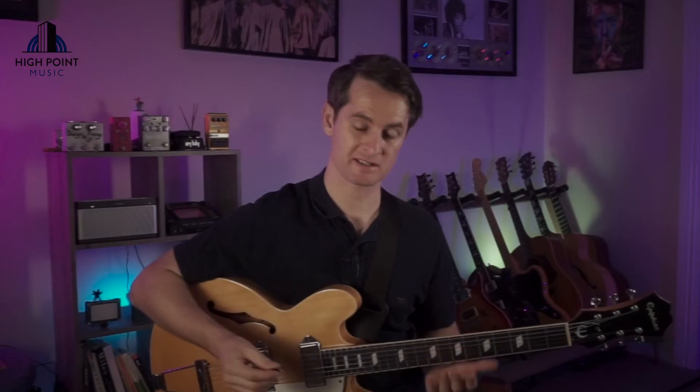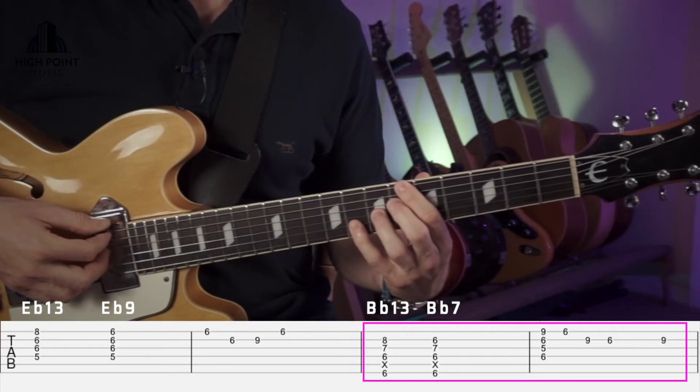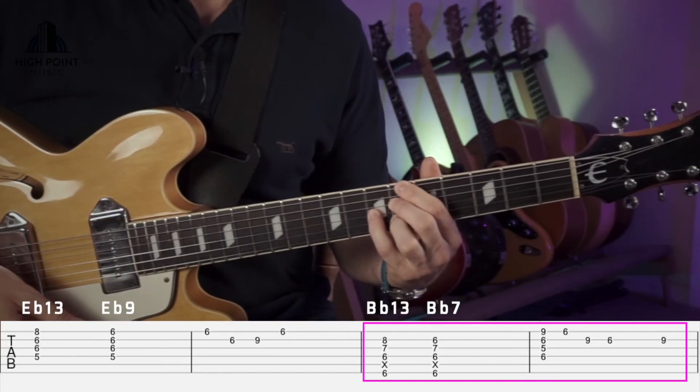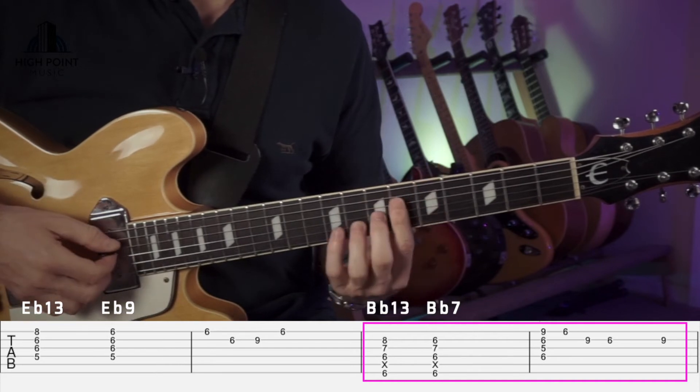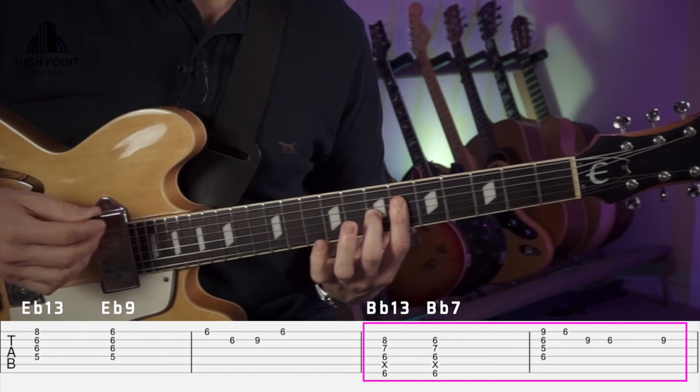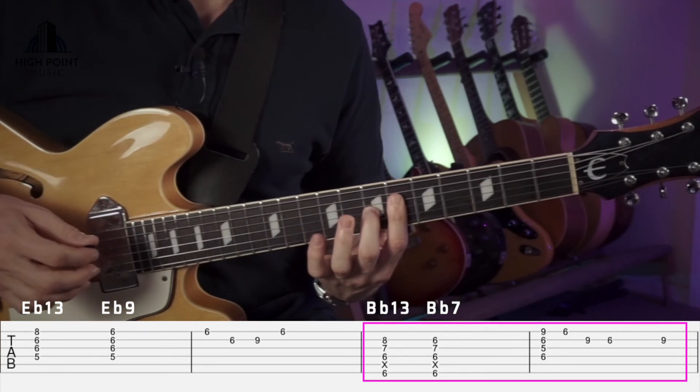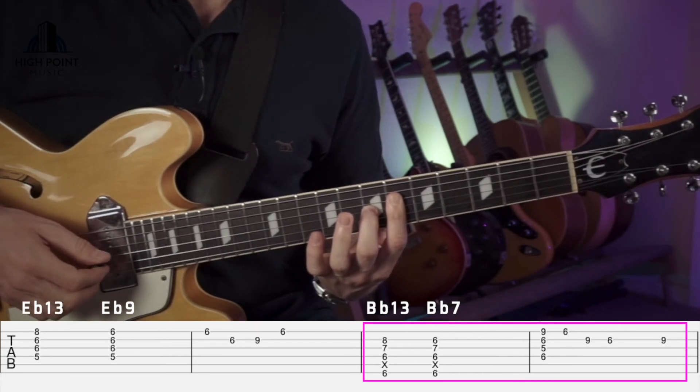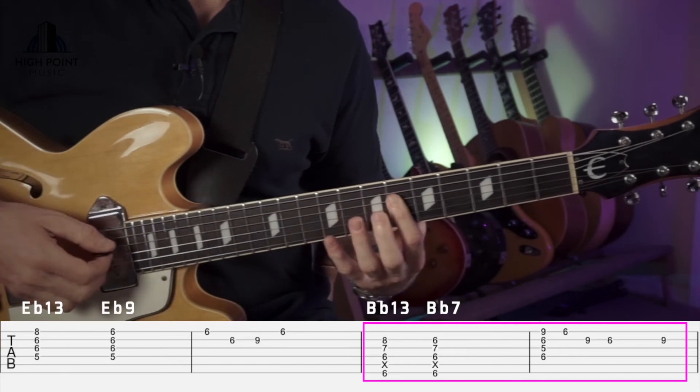So for our next section, we're just going back to our Bb13 here, just like we did there, but with our upper structure Bb we're going like we did on the second variation that we learnt today. So if I put that together with the Eb.